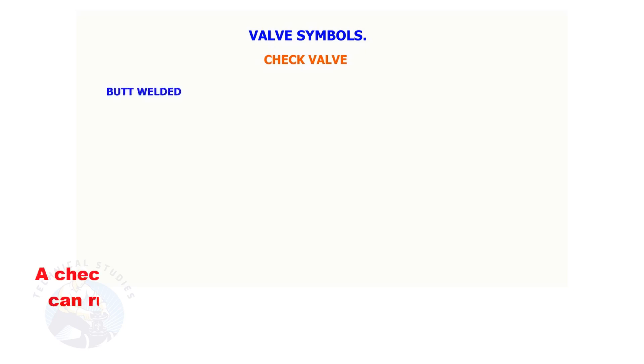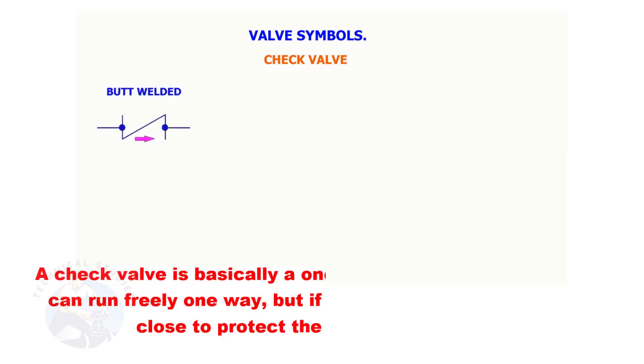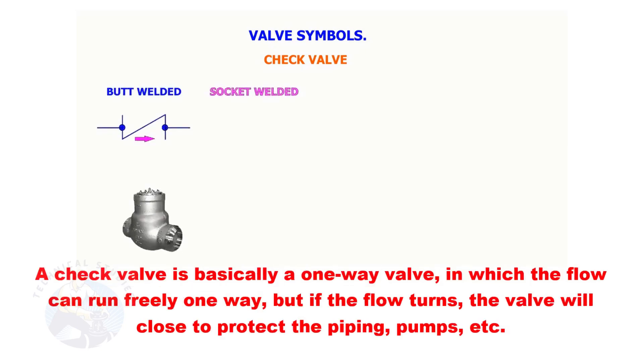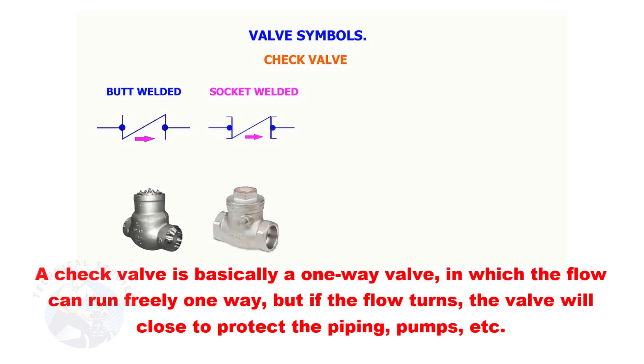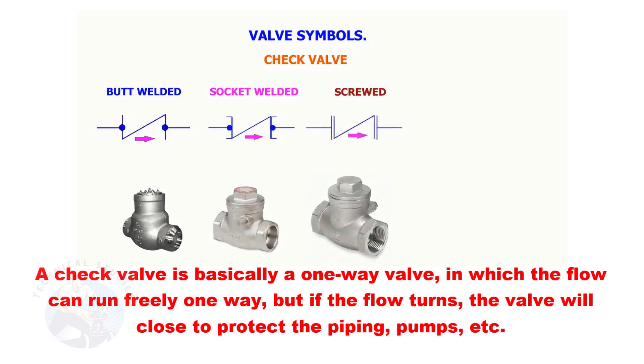Check Valve. A check valve is basically a one-way valve, in which the flow can run freely one way, but if the flow turns, the valve will close to protect the piping, pumps, etc.